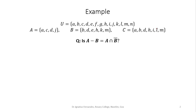Let's say we have a universal set U containing the alphabets from A to N. Set A is defined as {A, C, D, J}, set B is {B, D, E, H, K, N}, and set C is also defined. Now A, B, C are all coming from this universal set U.